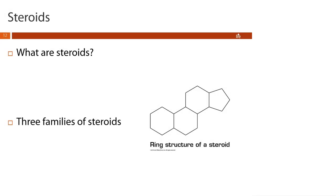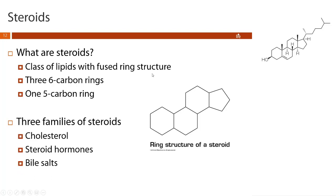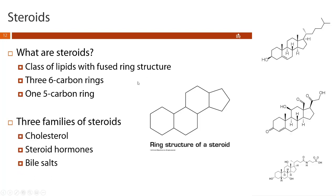Good afternoon biochemists. Today is the second part of our lipids series and we're going to talk about steroids and eicosanoids. Steroids are a class of lipids with a fused ring structure — three six-carbon rings and a single five-carbon ring — and we can subdivide steroids into three families: cholesterol, steroid hormones, and bile salts.